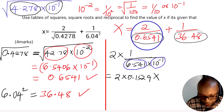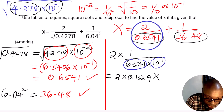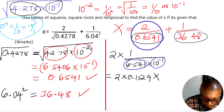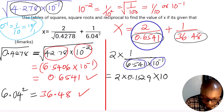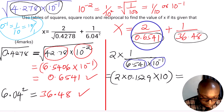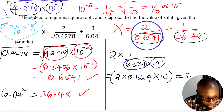Now the reciprocal of 10 raised to the power negative 1: since 10⁻¹ equals 1 over 10, the reciprocal of 1 over 10 is 10 over 1, so we multiply by 10. Therefore, 2 multiplied by 0.1529 times 10 gives us 3.058. Hold that answer.